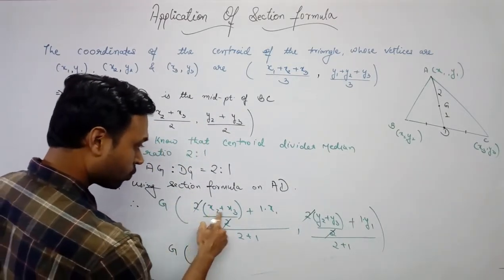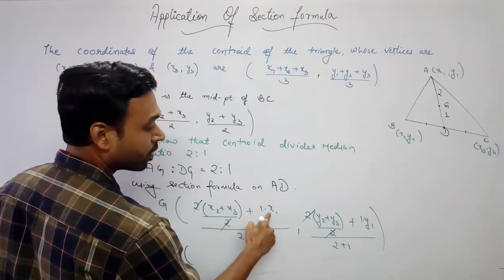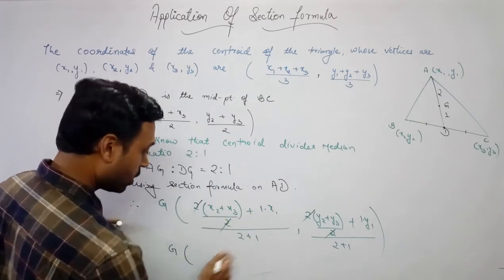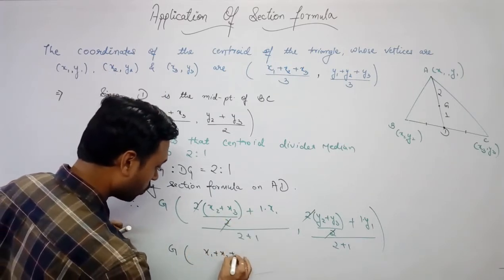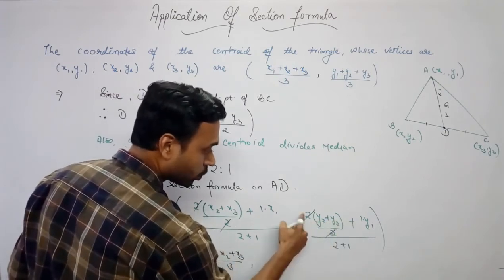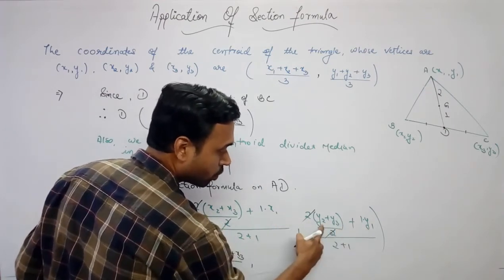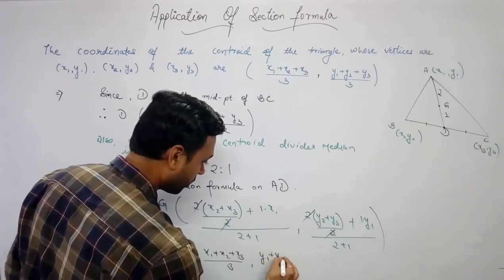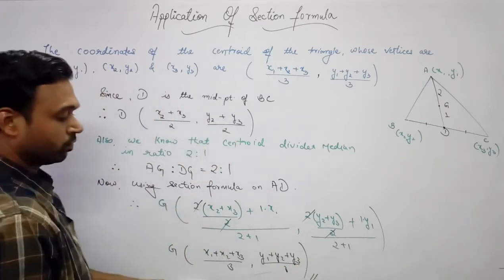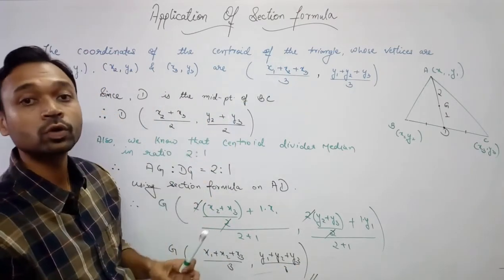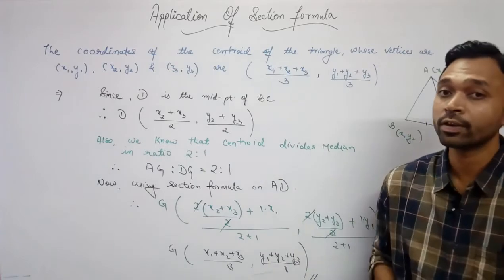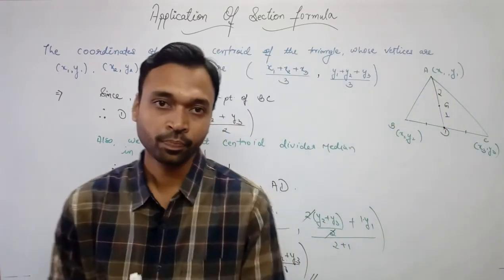After cancellation, G = ( (x2+x3) + x1 ) / 3, which gives (x1+x2+x3)/3. Similarly for the y-coordinate, (y2+y3) + y1 all divided by 3, giving (y1+y2+y3)/3. This is what we had to prove — the result (x1+x2+x3)/3, (y1+y2+y3)/3 has been obtained.